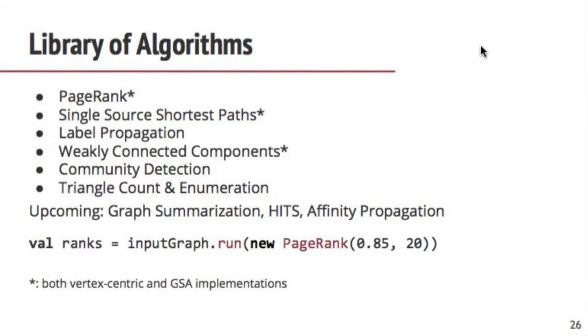The third component of Gelly is the library of algorithms. You don't have to write any of what I showed you — you can simply call graph.run(new ShortestPaths()) and it runs the provided implementation. We have several ready algorithms: PageRank, shortest paths, label propagation, community detection, connected components, triangle count and enumeration. We also have upcoming algorithms pending as pull requests: graph summarization, HITS, and affinity propagation.